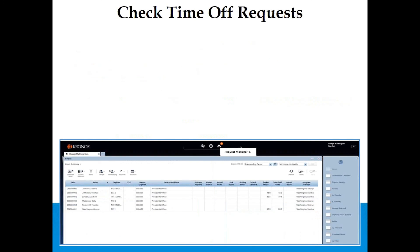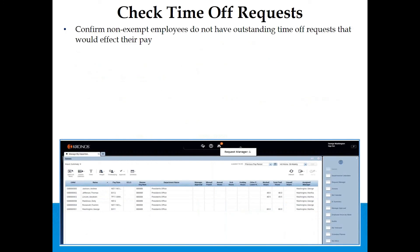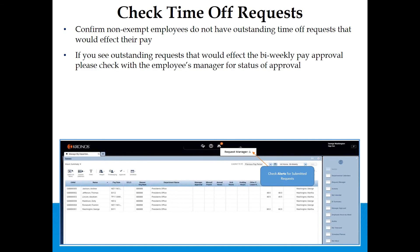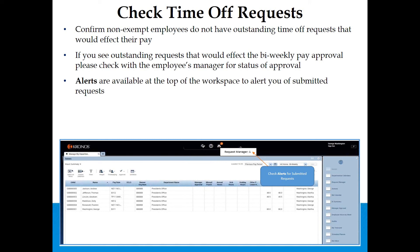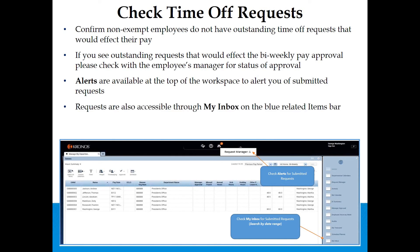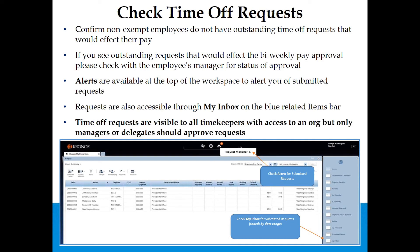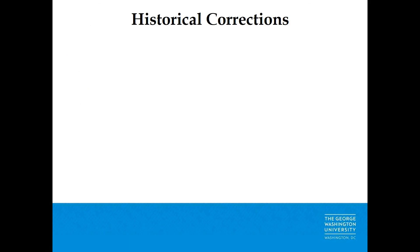Check Time Off Requests: Confirm non-exempt employees do not have a standing time off request that would affect their pay. Check alerts for submitted requests. If you see outstanding requests that would affect bi-weekly pay approval, check with the employee's manager for approval status. Alerts are available at the top of the workspace. Requests are also available through My Inbox on the blue related items bar. Time off requests are visible to all timekeepers with access to an org, but only managers or delegates should approve requests.